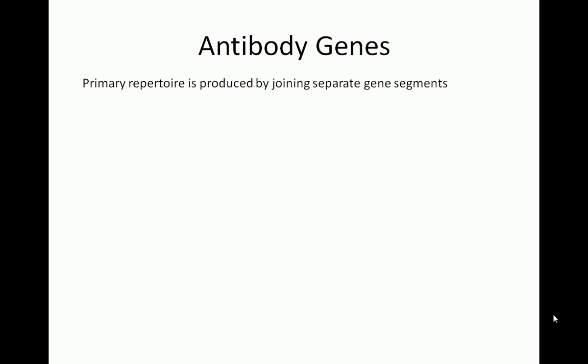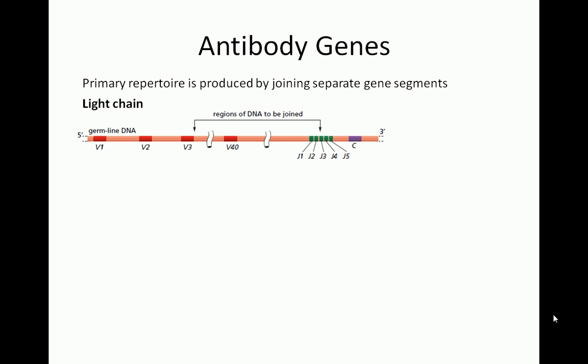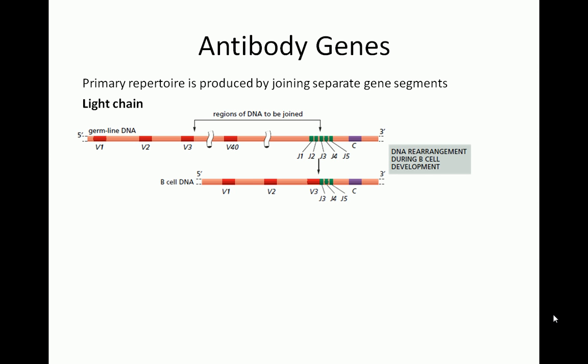We will now look at the mechanisms that B cells use to build the primary and secondary antibody repertoires. The primary repertoire is produced by joining separate antibody gene segments. We will look first at how light chains are made. Before any DNA joining or rearrangement occurs, all DNA involved in making light chains is present in the B cell. There are many variable or V regions, multiple junction or J regions, and a constant region. During B cell development, a random V region will be placed next to a random J region, and the segments in between will be eliminated.